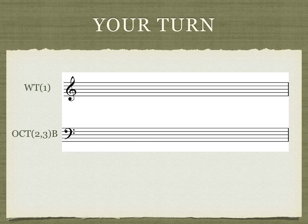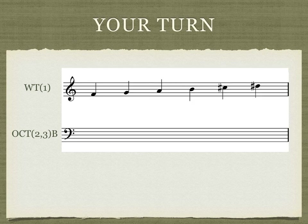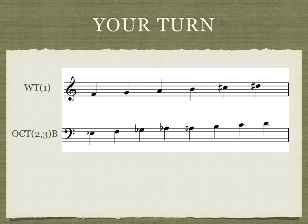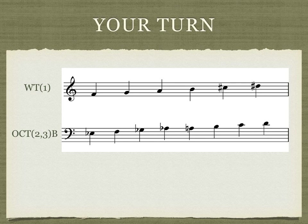For whole tone 1, you should have the pitches F, G, A, B, C-sharp or D-flat, and D-sharp or E-flat. Since this is a symmetrical scale, you could have started on any pitch — so as long as you have all of these present, you are correct. For octatonic 2-3-B, you must begin on a whole step in the pattern. Your pitches must include E-flat or D-sharp, F, G-flat or F-sharp, A-flat or G-sharp, A, B, C, and D. If you started on E-flat, G-flat, A, or C, you have the B-interval designation, so you are correct. Here's what these two scales sound like.